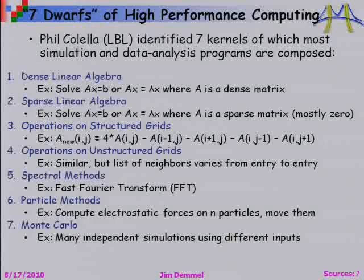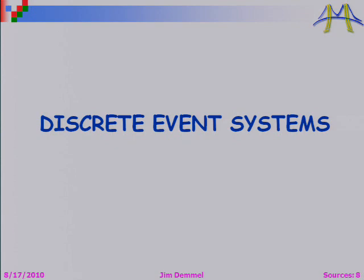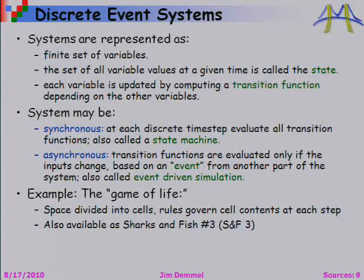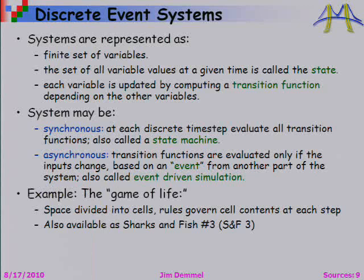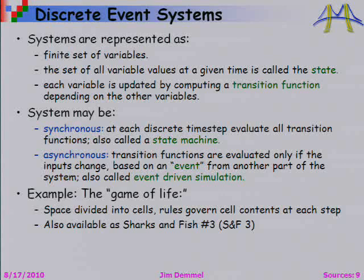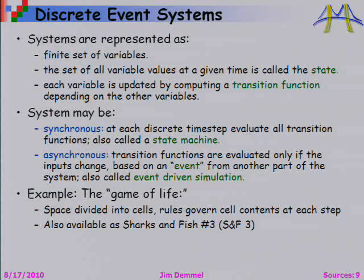Let's start with discrete event systems. Systems are represented as a finite set of variables. All the variables have a given value at each time — T=1, T=2 — that's called a state. There's a transition rule, a function that says how you update the state at time T+1 as a function of the values at time T. There are two flavors: synchronous, where there's a common time step and everybody steps forward at once, and asynchronous, where large parts of the system may do nothing until an event arrives. The Game of Life is a classical example — there is a mesh, the value at each cell is either alive or dead, and depending on how many neighbors are alive or dead, you are alive or dead at the next stage.